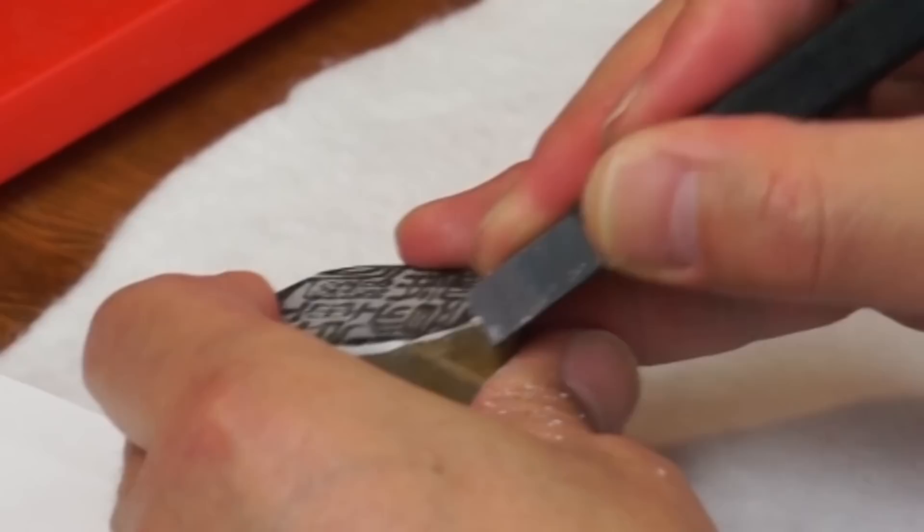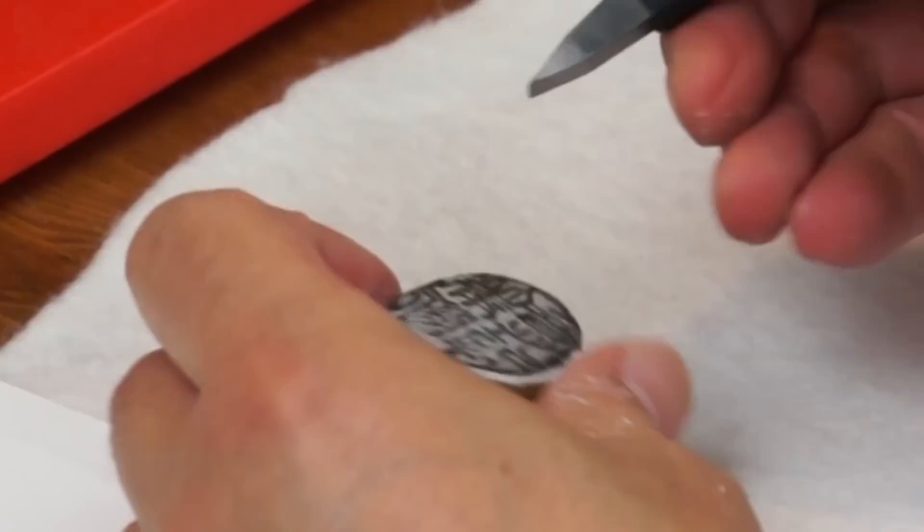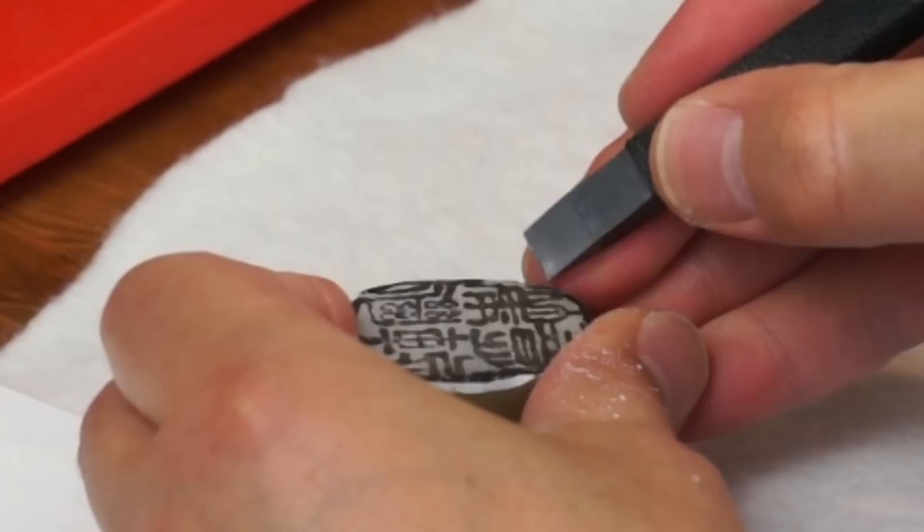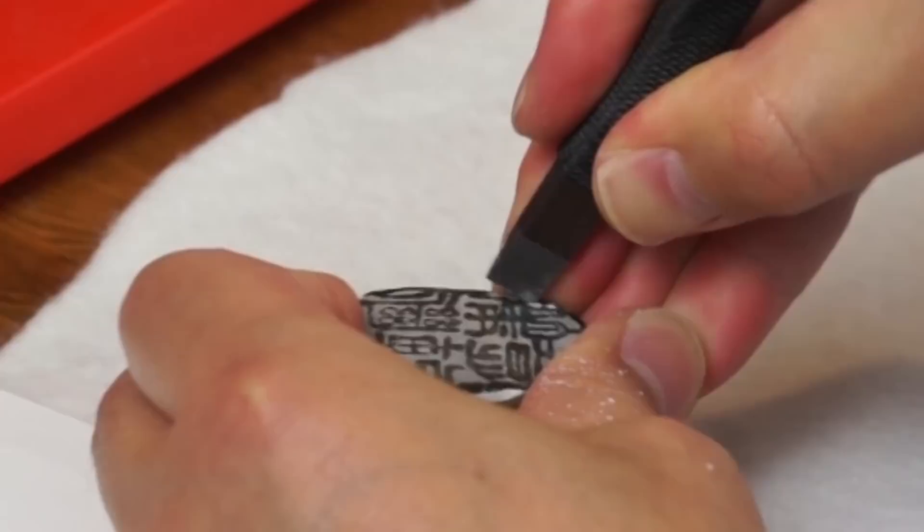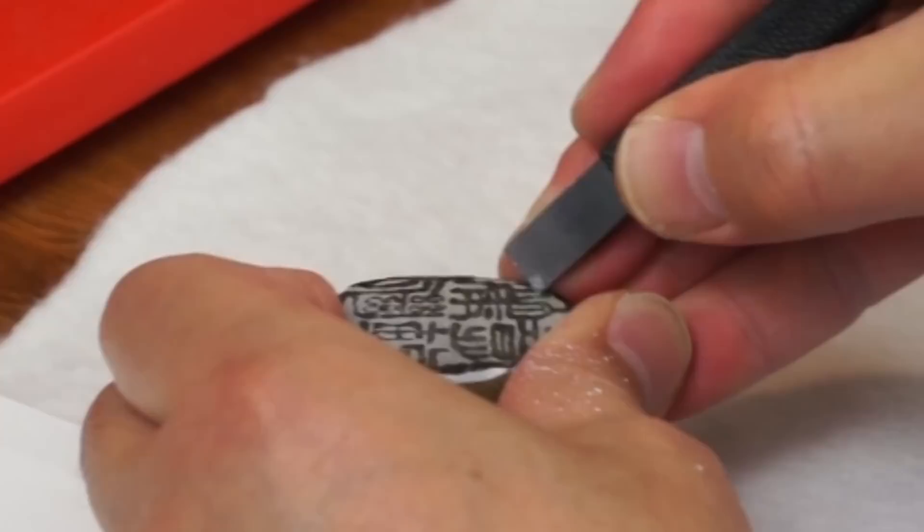Now I'm going to start. The first character is brush, a brush stroke. This is a yang carving. Yang means positive. Red will be on the final stamp.